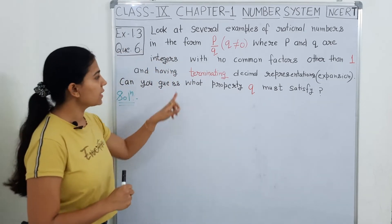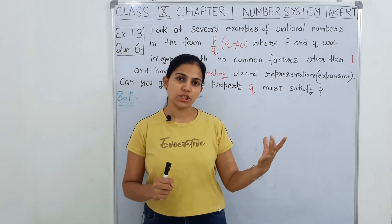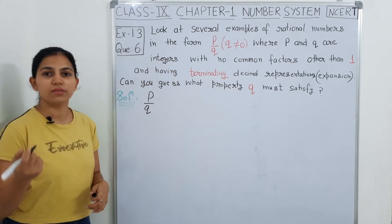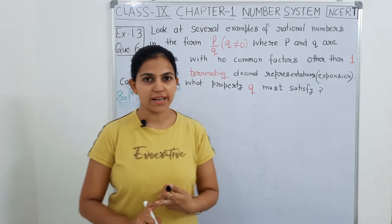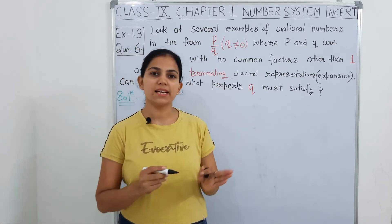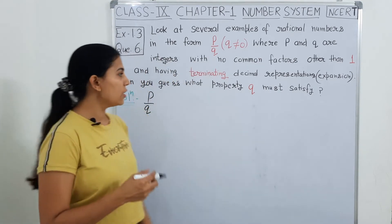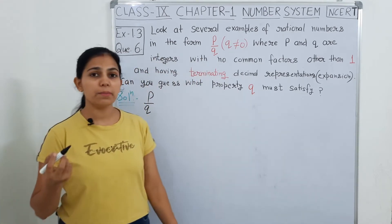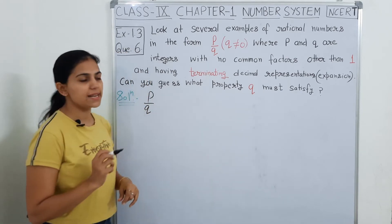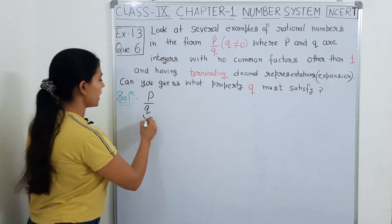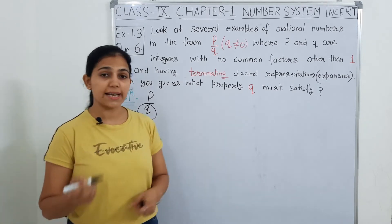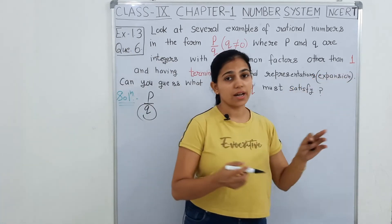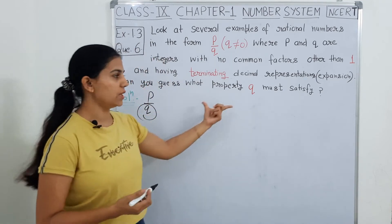और एक और चीज़ बोली है कि terminating decimal expansion — उनकी expansion जो है वो terminating आनी चाहिए. जब हम P upon Q को divide करके solve करेंगे, तो remainder 0 आना चाहिए. Remainder 0 आएगा तो decimal expansion terminating होगी. और हमें question क्या पूछा? Can you guess what property Q must satisfy? अब क्या आप बता सकते हो कि Q कौन सी property को satisfy करेगा? मतलब Q जो है वो कैसा होना चाहिए कि decimal expansion terminating आए और P और Q का common factor 1 के इलावा कोई और ना हो?